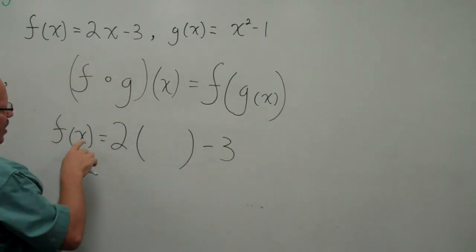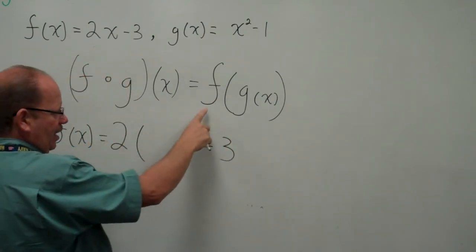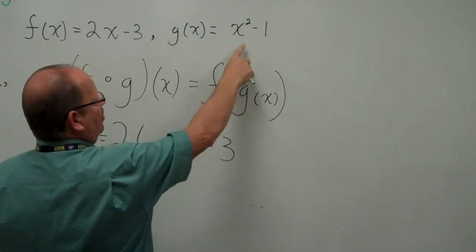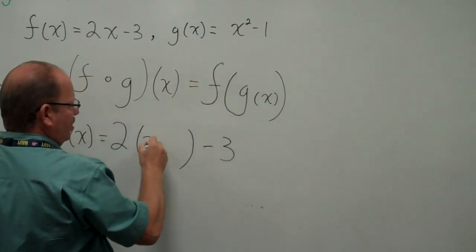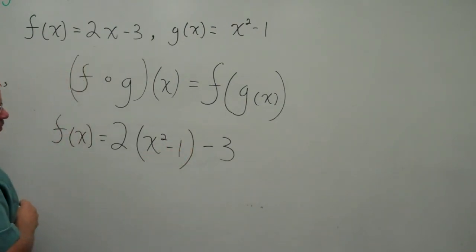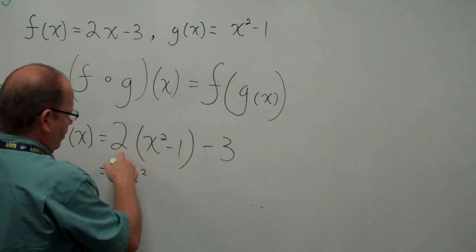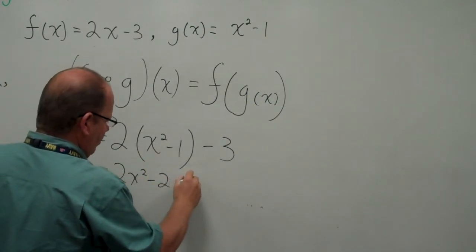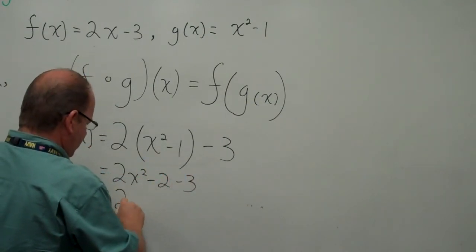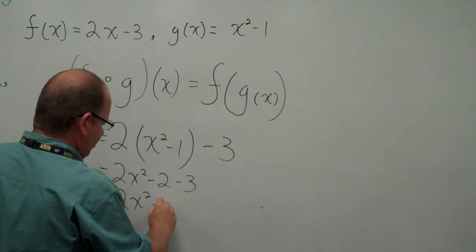And let's see, f of what? Well, f of g(x). And so we just take g(x) and insert it there. Simplify. 2(x² - 1) - 3 = 2x² - 2 - 3 = 2x² - 5.